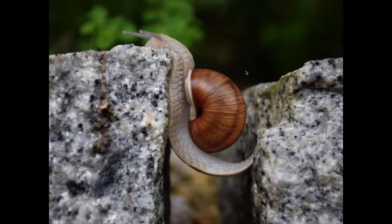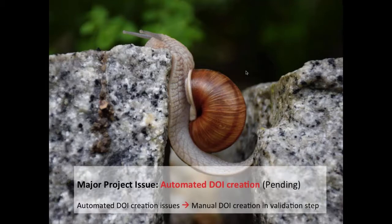Another must-have from the project was to automatically generate DOIs for datasets. Currently, Pure is configured to mint DOIs, but only directly from DataCite itself, which created a roadblock for us. It would have been great to configure Pure to mint DataCite DOIs through the ANS back end, but we're currently in discussions with ANS and Elsevier and have manual workarounds. When a researcher submits their dataset, they have an option to send it for validation, and as our staff are looking through the dataset, we go to ANS, manually create a DOI, and put that into their submission.